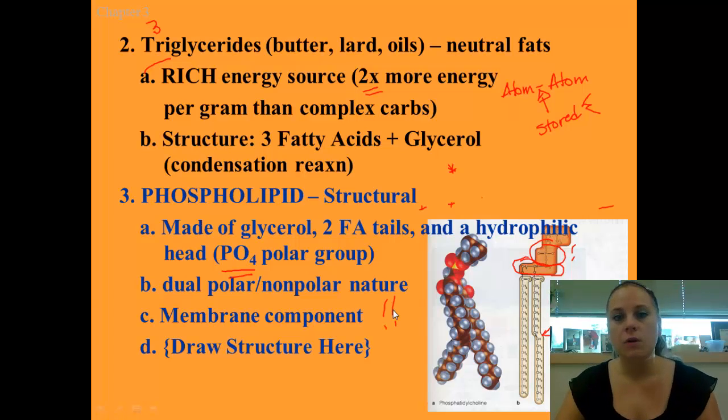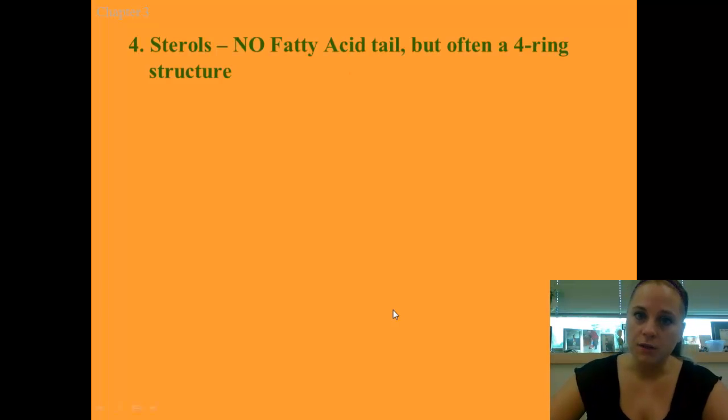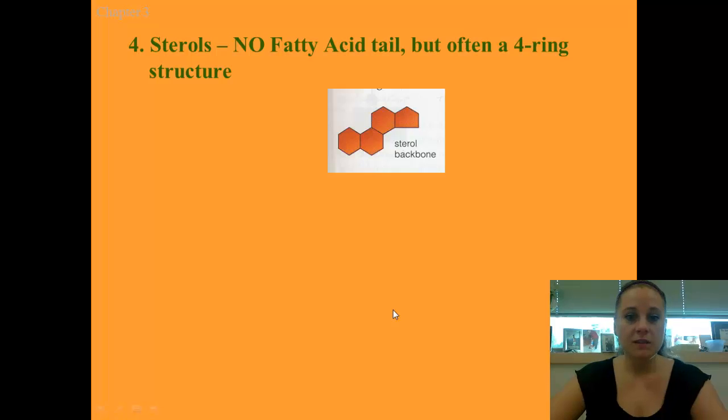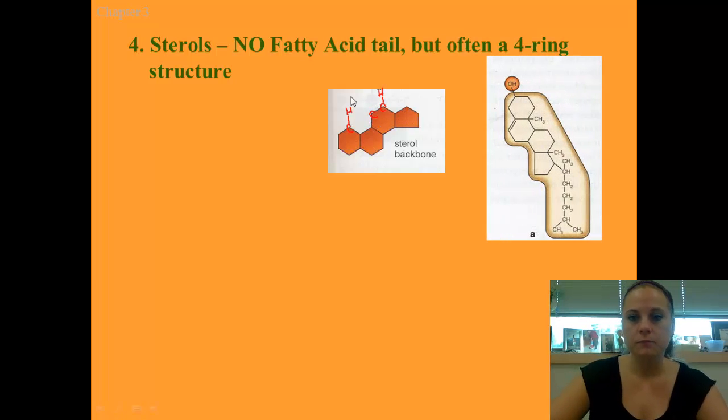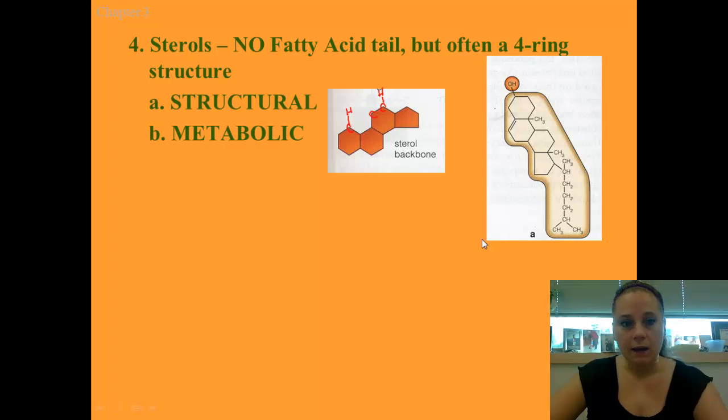Another class of lipids is known as sterols. Now these are a unique class of lipids because they structurally are very different. They don't have any fatty acid tails, but they are shaped in a four ring structure, so that means they look like that. And again, remembering what I mentioned earlier, every vertex means carbon. So here's the backbone. There's another example over here. And this backbone is very common in all sterol molecules. They are structural, that's why we have them. They're metabolic for breakdown. They're hormonal. Your testosterone, estrogen, aldosterone, cortisol, these hormones are all sterols. They're all steroids. That's where the term comes from, steroid hormones.